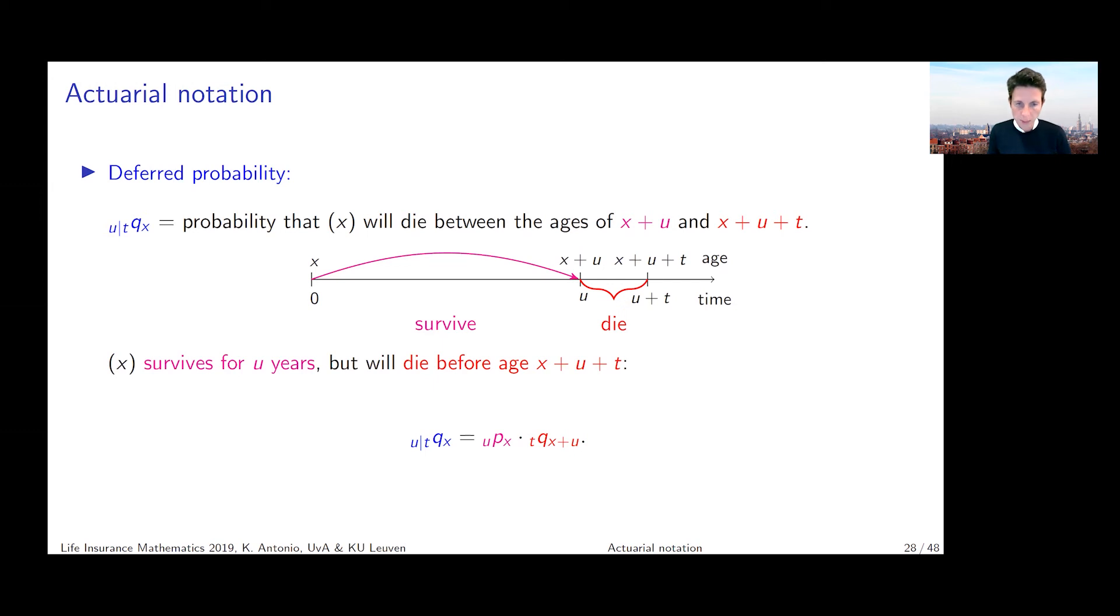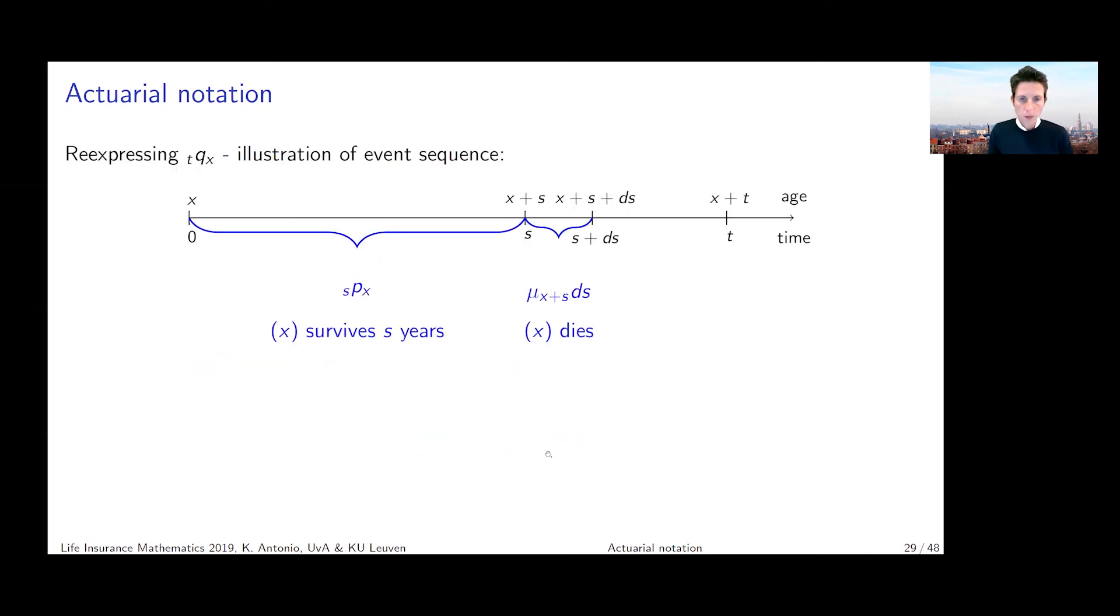Okay, so that's a nice way to frame this, to picture this deferred probability. We could also think a little bit more about how to deal with _tq_x, the probability of dying in t years from now for the x year old.